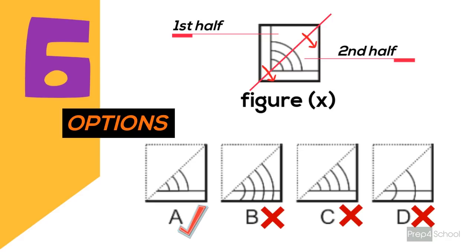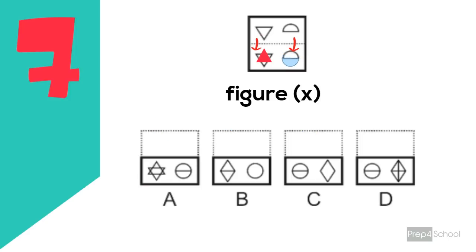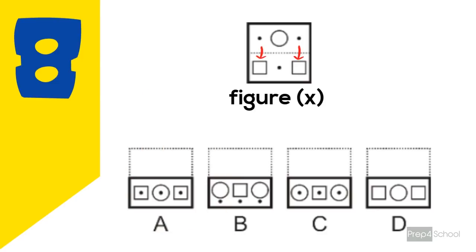Problem seven: the top portion is folded to the bottom because the dotted line is at the top in all options. The mirror image of the first two objects will appear on the second portion — the triangle is inverted and the semicircle is also inverted — but there is no change in the image of the second portion. When two triangles combine they form a star pattern, and two semicircles combine to form a complete circle. So the answer is option A.